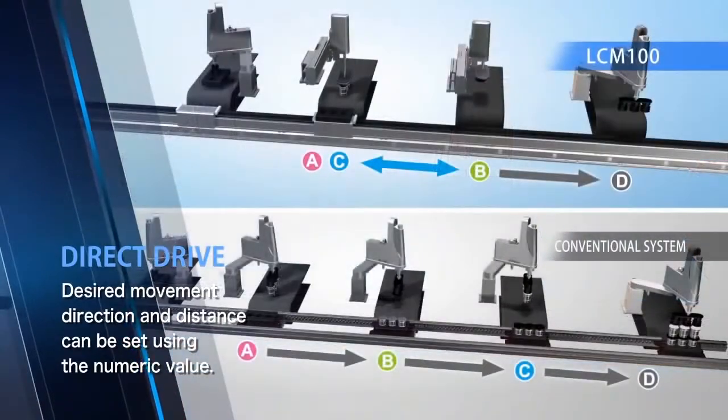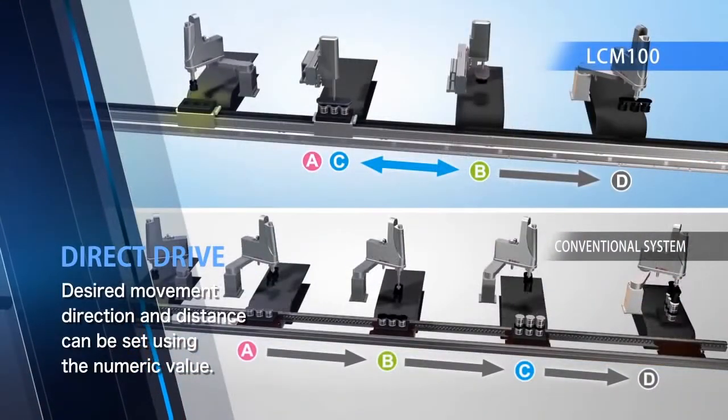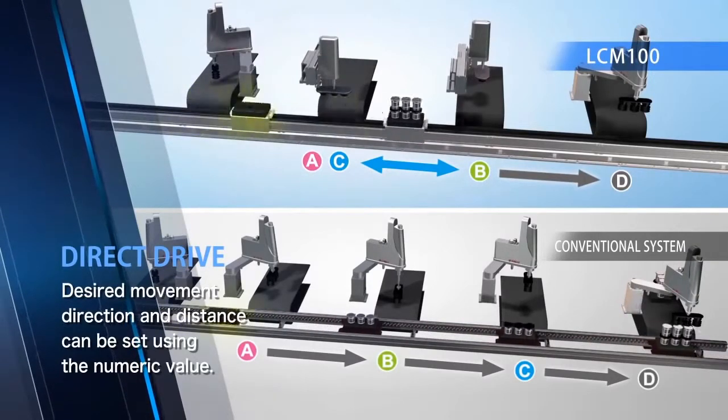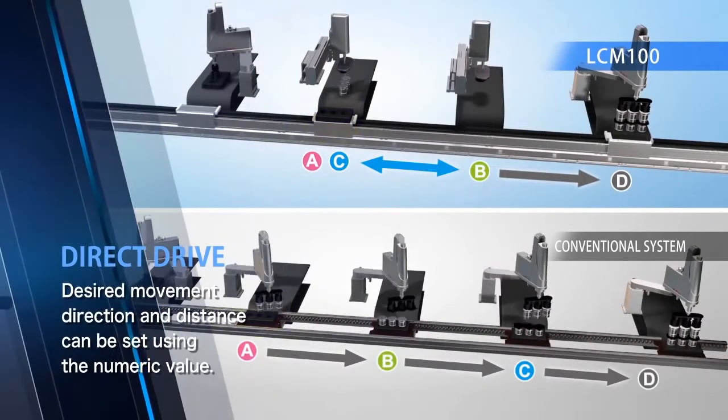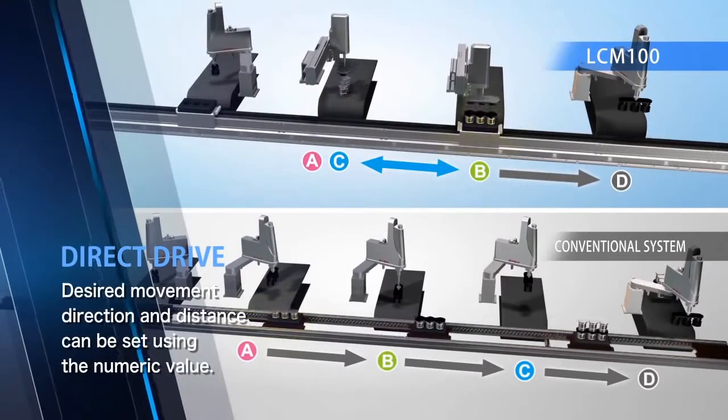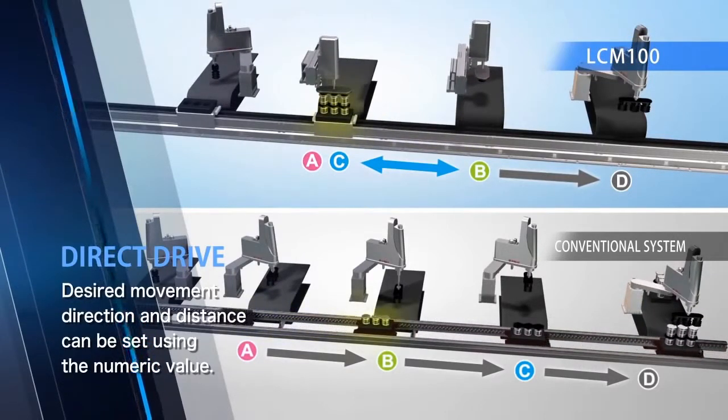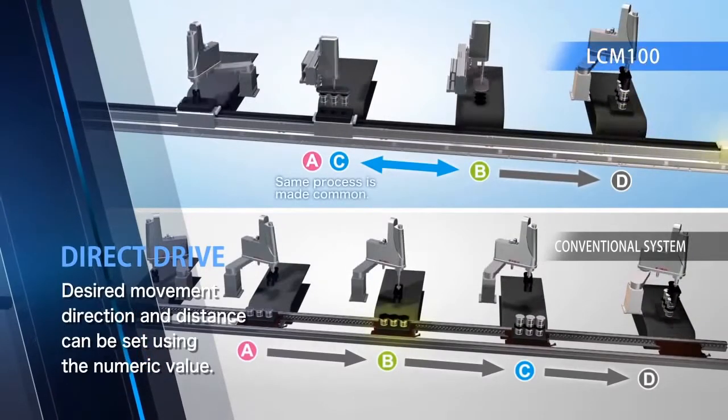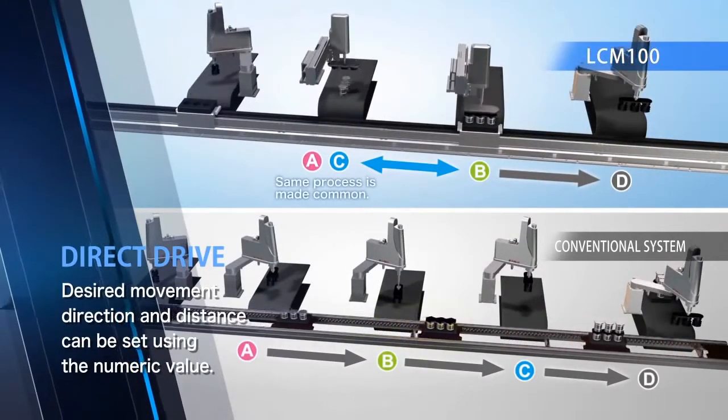Unlike conventional conveyor systems, LCM is bi-directional and eliminates duplicated processes by sharing common processes. This feature reduces the size of the physical line layout and its total cost.